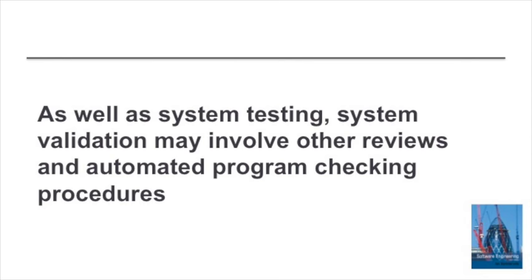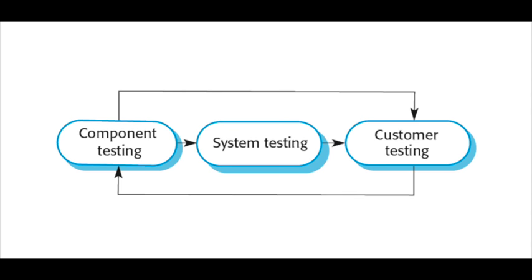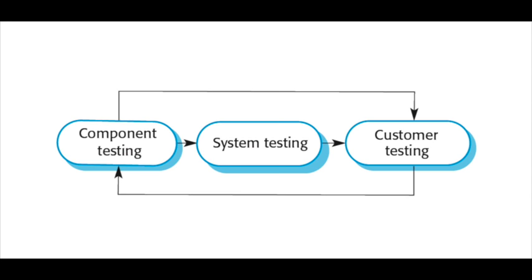As well as testing in the verification and validation process, there may be other checking and review processes, sometimes supported by automated tools. The testing process varies quite widely from one organisation to another, but within the testing process there are always three activities. One is component testing, where individual parts of the system are tested, often by the developer of the program, sometimes by a separate test team, sometimes using techniques such as test-first development and automated tests. Then there's system testing, which takes place at a number of levels — it's used to test the APIs, to check if the system meets the customer's requirements, and to check the non-functional behaviour of the system such as its performance and reliability.